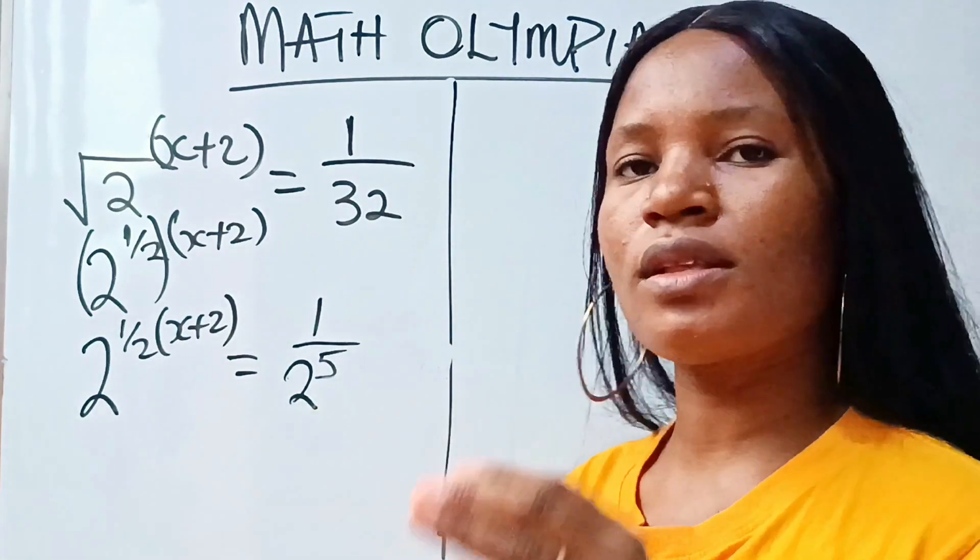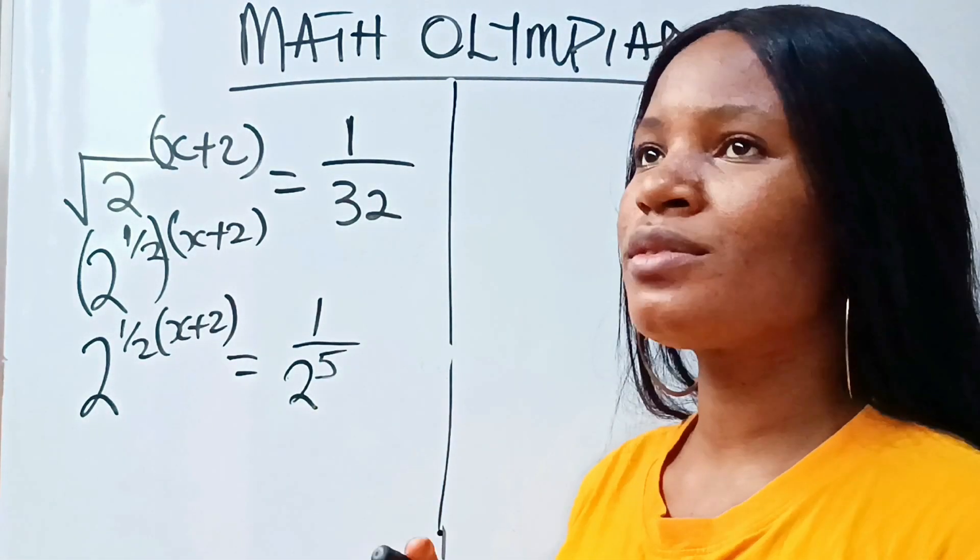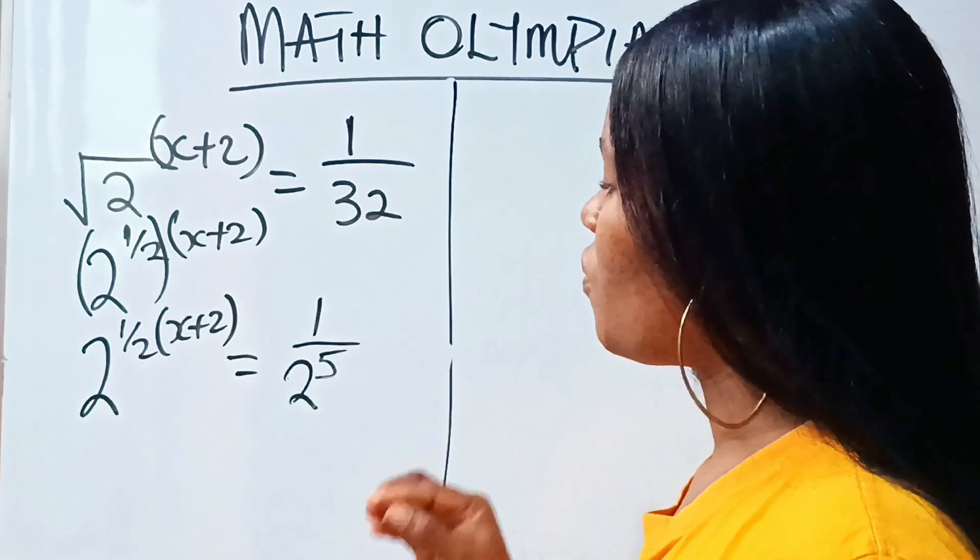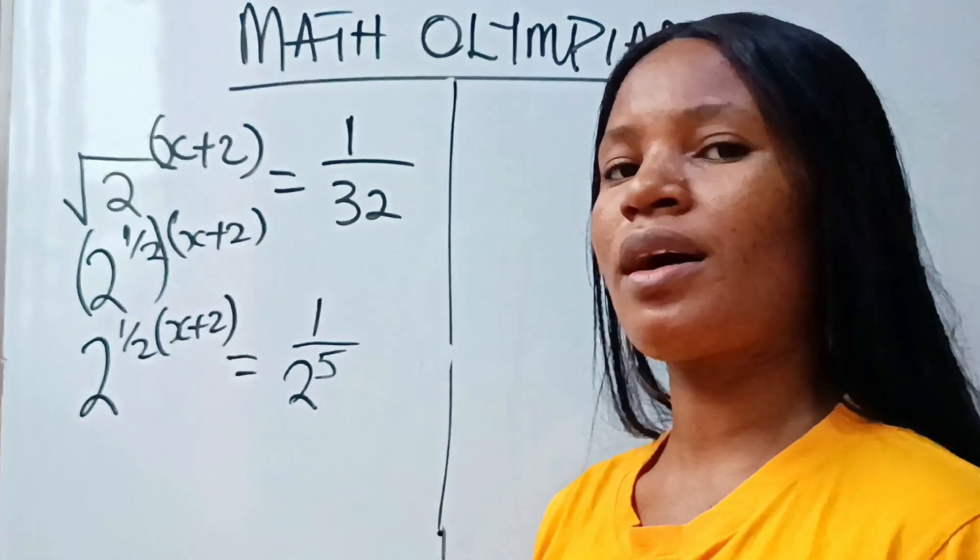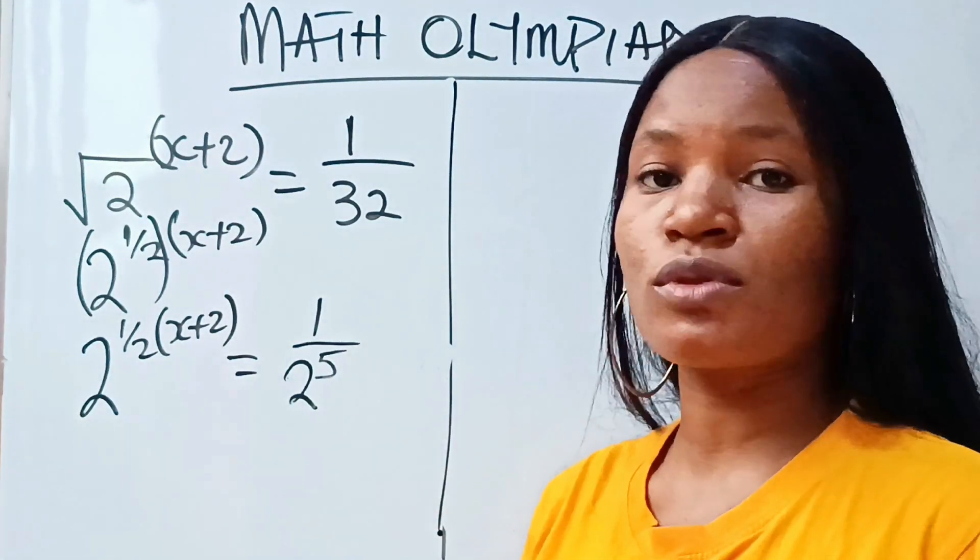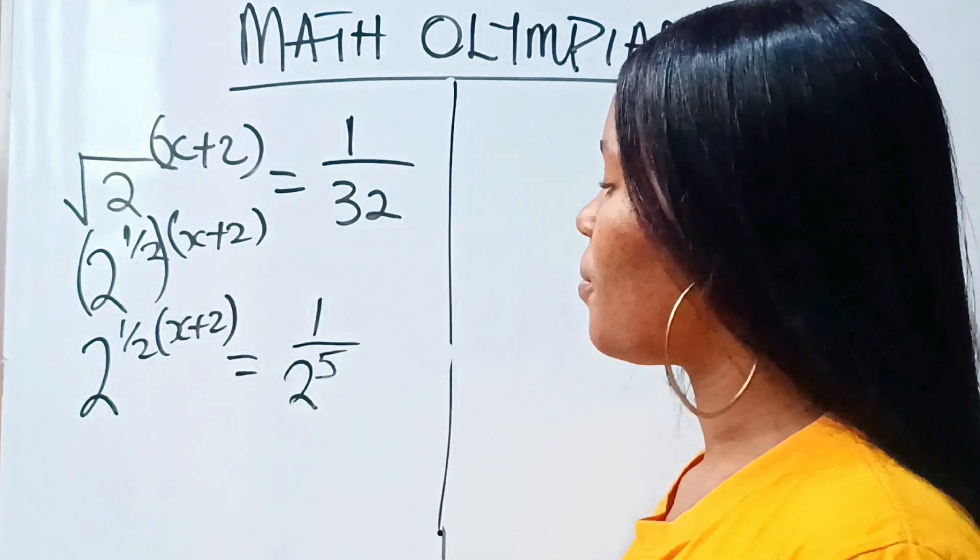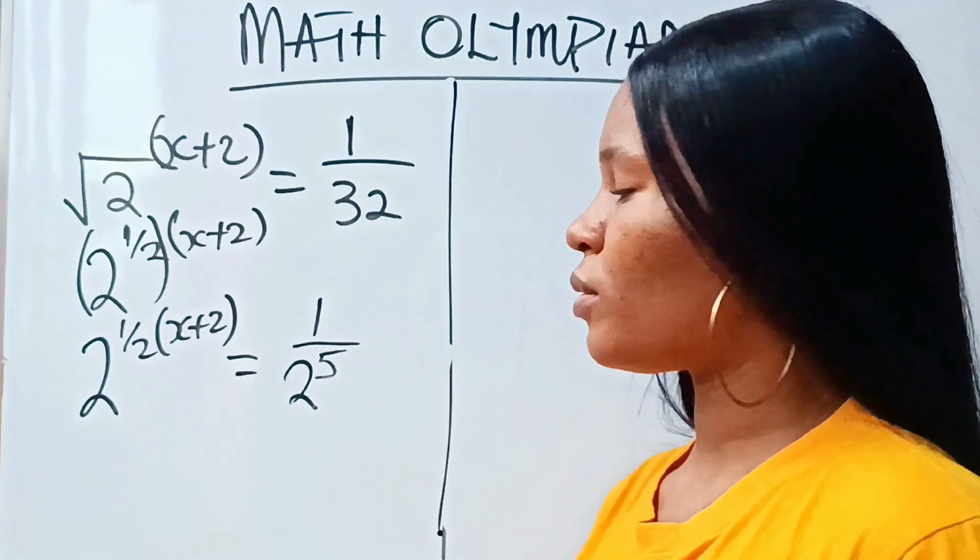So what do we do? In indices, the best thing you can do for yourself is if you can actually put whatever you have, the numbers you have to be on the same base. Once you are able to make them to be in the same base, then your solution is very close.